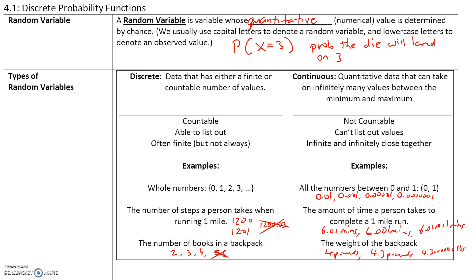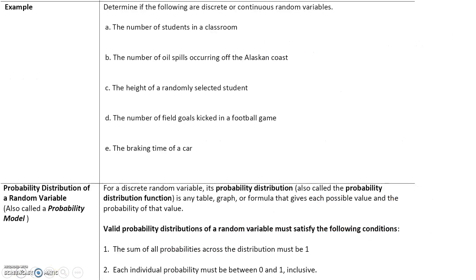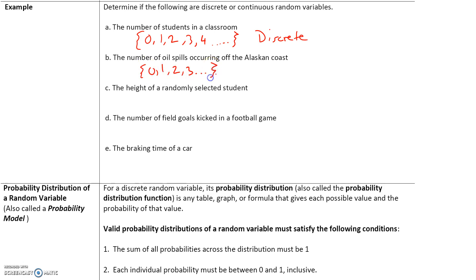Let's see some examples. Determine if the following are discrete or continuous random variables. The number of students in a classroom — while this is finite, a classroom cannot hold an infinite number of students and we can count them: 0, 1, 2, 3, 4 students, etc. These are countable, so this is a discrete random variable. The number of oil spills occurring off the Alaskan coast — we can have no oil spills, or 1, 2, or 3. But can we have 3.5 oil spills? No. So this is also a discrete random variable.